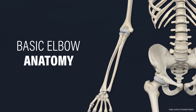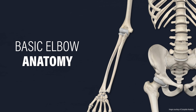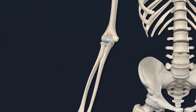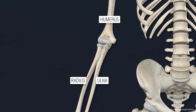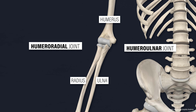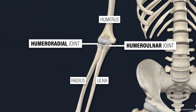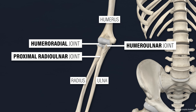Let's start by reviewing the basic anatomy of the elbow. The two bones of the forearm are known as the radius and ulna, while the arm bone is known as the humerus. Together, these three bones form the humeral radial and humeral ulnar joints, which make up the elbow. The radius and ulna also join here, and this is known as the proximal radial ulnar joint.